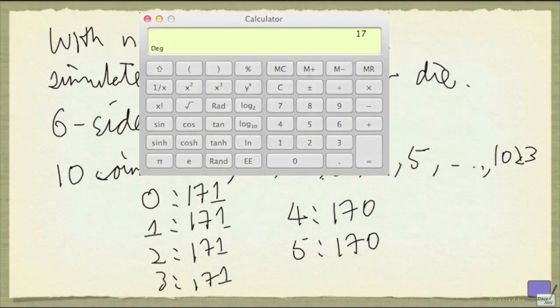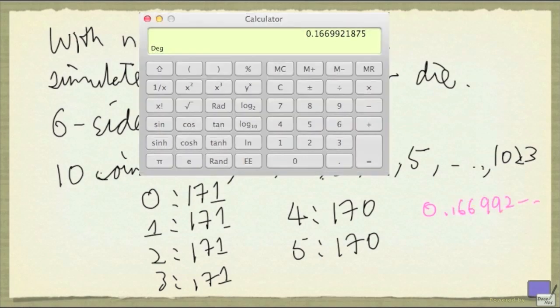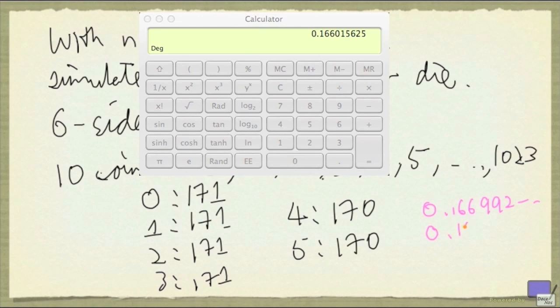Okay, so 171 divided by 1024 is 0.16699, whereas 170 divided by 1024 is 0.166 and so on. So the two are really, really close. And for most practical purposes, that's good enough.